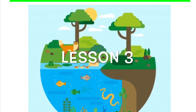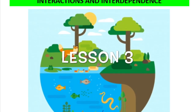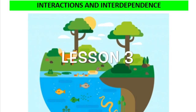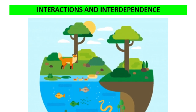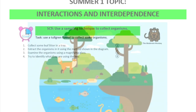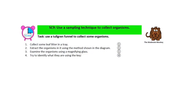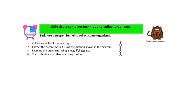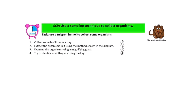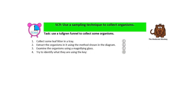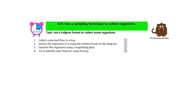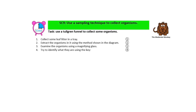Welcome to Lesson 3 on Interactions and Interdependence. Starting with SC9: use a sampling technique to collect organisms.